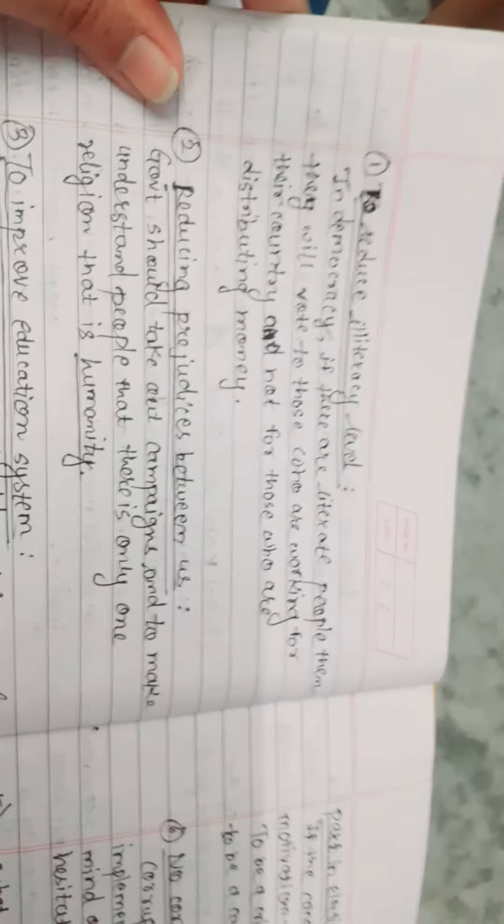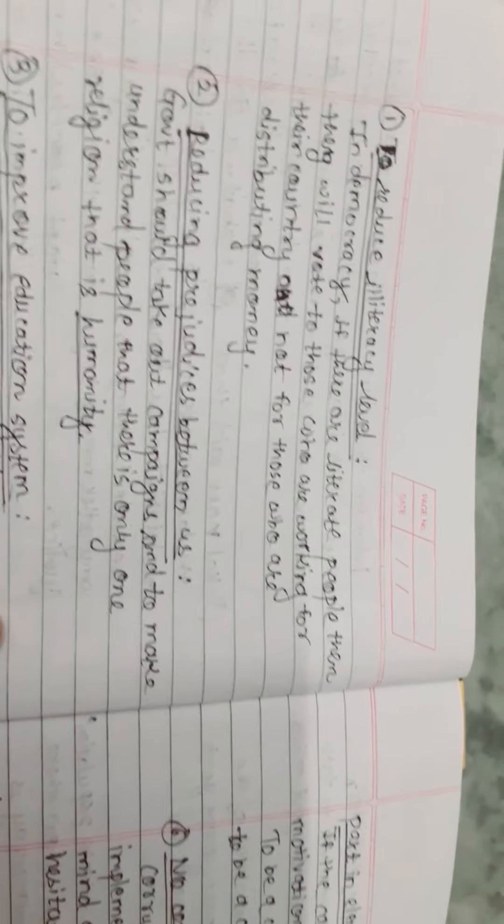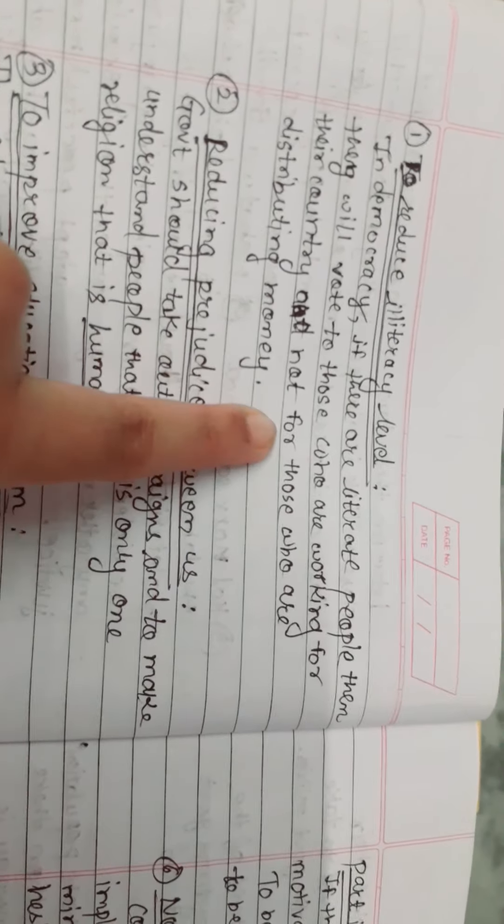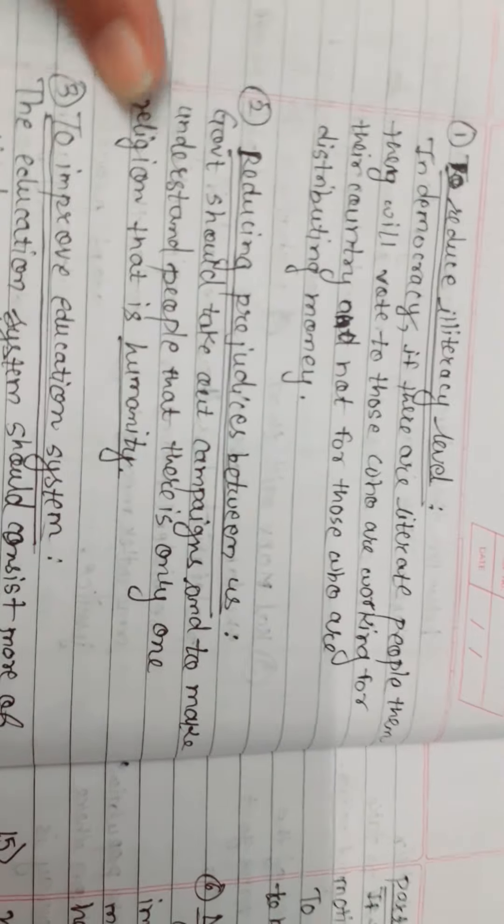The measures are to reduce the illiteracy level. In democracy, if there are literate people, they will vote for those who are working for their country and not for those who are distributing money.